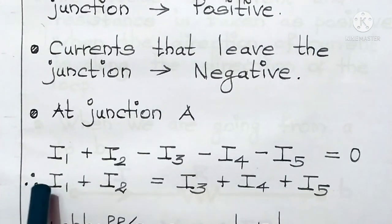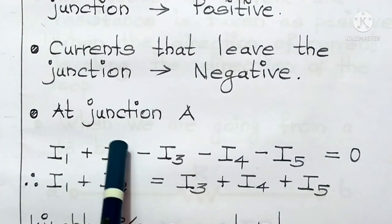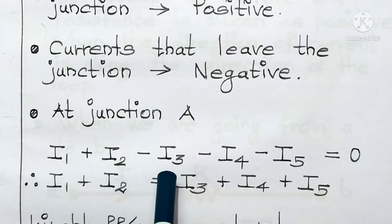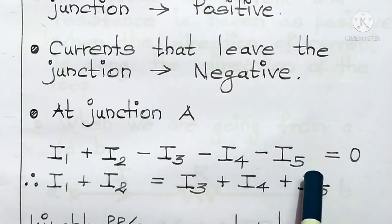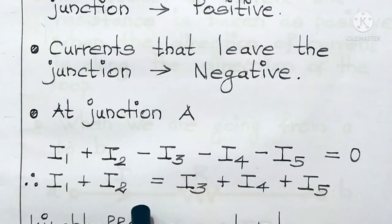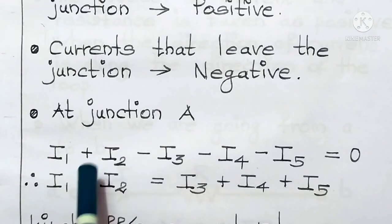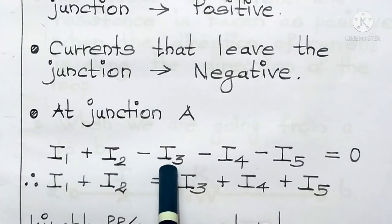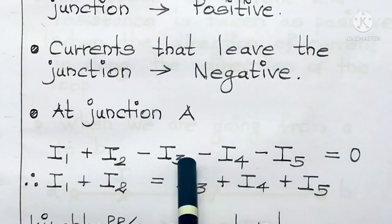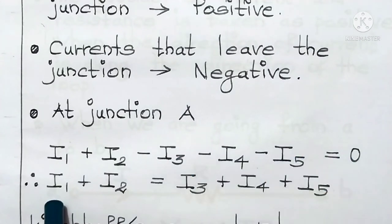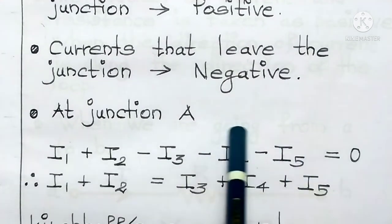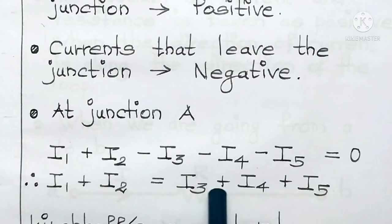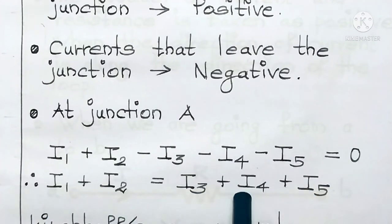The currents I1 and I2 are given a positive sign, whereas the currents I3, I4, and I5 are given negative signs, because I1 and I2 enter the junction whereas the other three leave the junction. Therefore, I1 plus I2 is equal to I3 plus I4 plus I5.